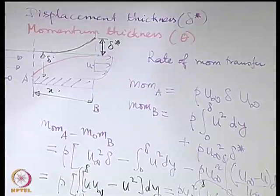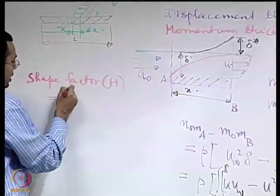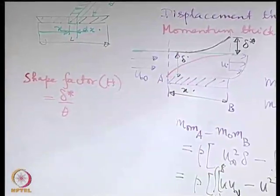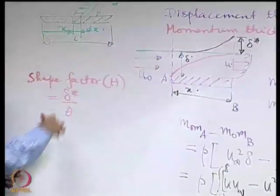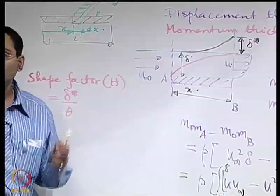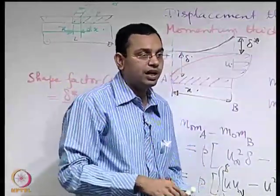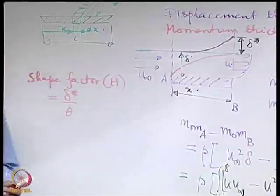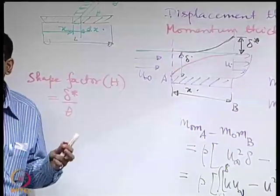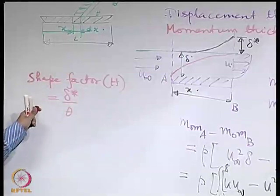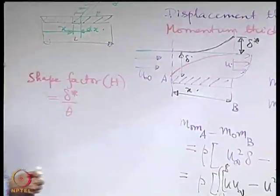The momentum thickness theta physically indicates the deficit in rate of momentum transport across two sections due to boundary layer development. A third parameter, the shape factor H, is defined as delta-star divided by theta. It is called a shape factor because this ratio depends solely on the shape of the velocity profile — u/u-infinity as a function of y/delta. Once that shape is fixed, H is automatically determined.